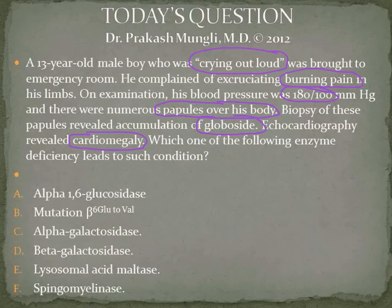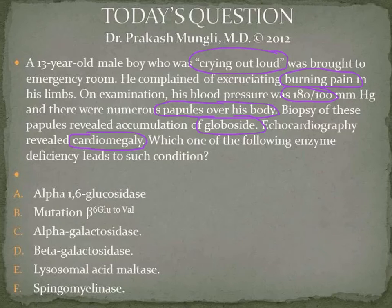Going with the signs and symptoms: a painful crisis is present, which explains the burning pain all over the limbs and peripheries. Hypertension is present, numerous papules over the body, and cardiomegaly. Collectively, this points to Fabry disease.